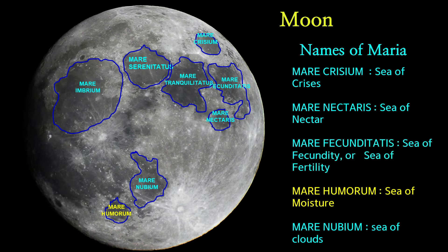Mare Humorum is a lunar mare. Mare Humorum means Sea of Moisture. Mare Nubium is a lunar mare in the Nubium basin on the Moon's near side. The mare is located just to the southeast of Oceanus Procellarum. Mare Nubium means the Sea of Clouds.